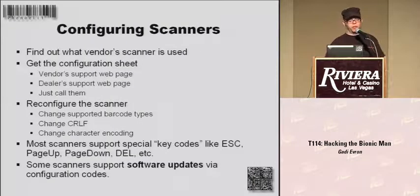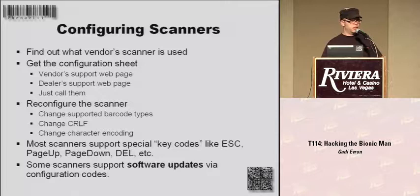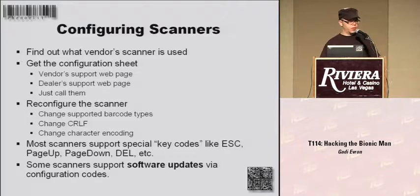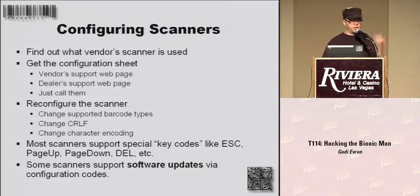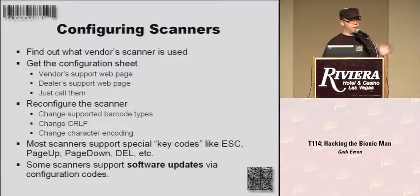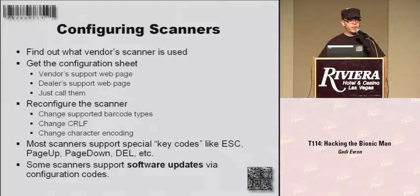You go to the vendor's page — many vendors actually post the configuration barcodes on their web page — and you reconfigure it. You can change the supported barcode types, which means the system that formerly thought it was only accepting, say, UPC barcodes, now suddenly accepts all types. Because all the scanners support all the barcode types — you don't buy a separate scanner for UPC; the chipsets are so cheap that all scanners support all barcodes. You have to actually configure them away. So the system that used to only accept UPC will suddenly accept pretty much everything you feed it. Not good.